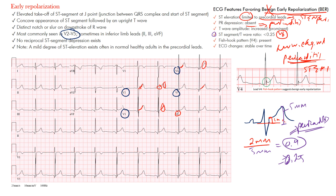In early repolarization, because T waves are more prominent, the denominator in the ratio is larger, which brings the overall ratio down below 0.25. That's why the ratio helps distinguish early repolarization from pericarditis.